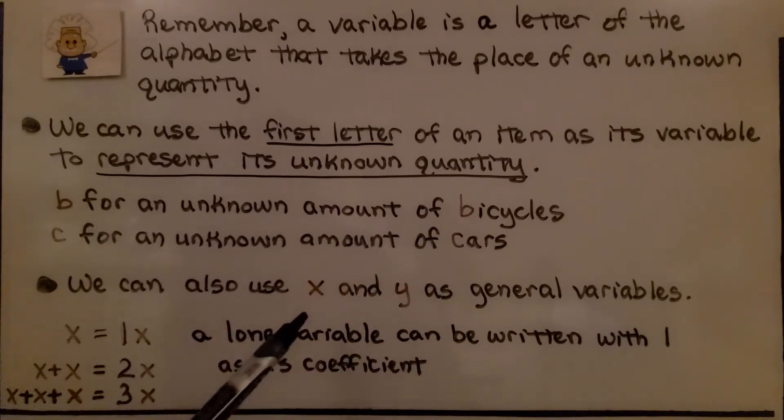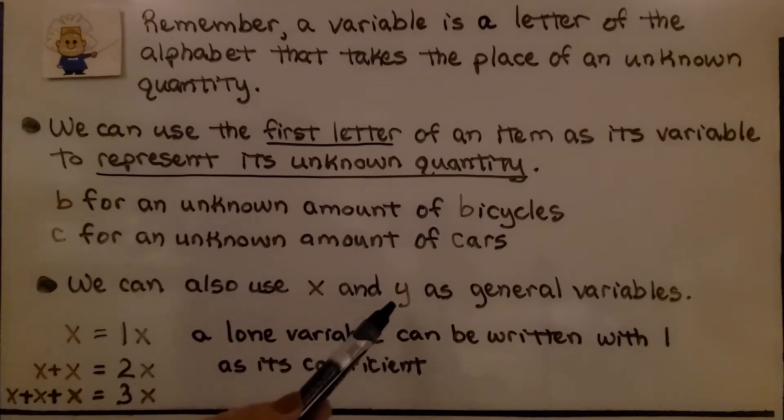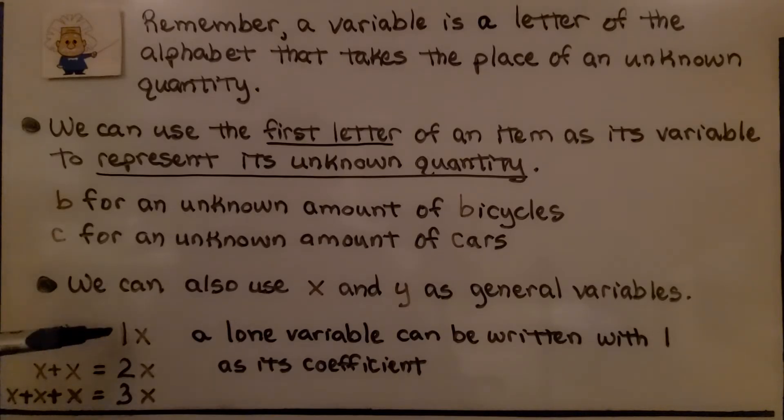We can also use x and y as general variables. A lone variable can be written with 1 as its coefficient. The number just to the left of the variable is called the coefficient. If we have an x here, that's just 1x. Just like if we had x plus x, that would be 2x. And if we had x plus x plus x, that would be 3x.